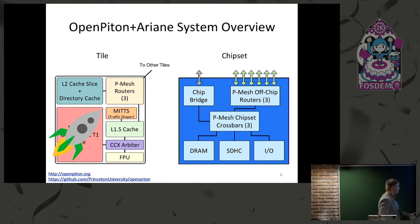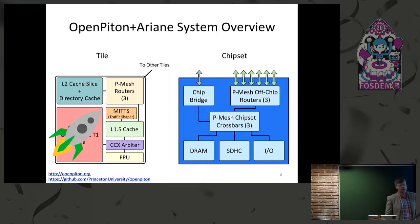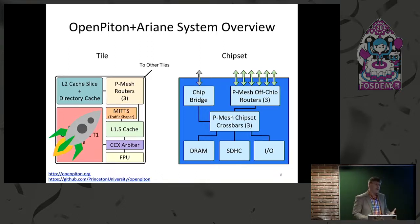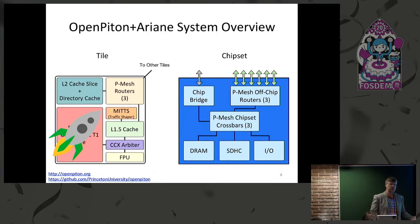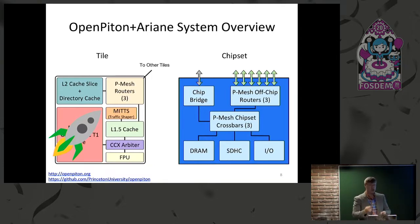Nowadays we're doing OpenPiton plus Ariane. We literally took the OpenSPARC core, ripped it out, and put in the Ariane core. There's a lot of work that went into that — it's not quite as easy as just swapping them. We have a paper coming out with the ETH Zurich team at ASPLOS in two months where we talk about how to do that and build the infrastructure so you can plug in lots of different core types that are vastly different.